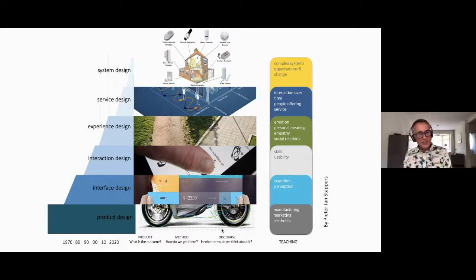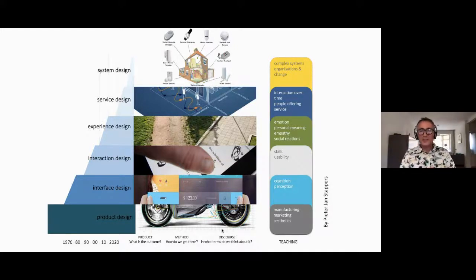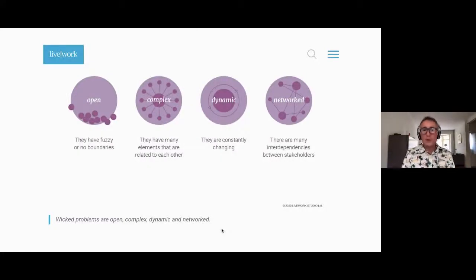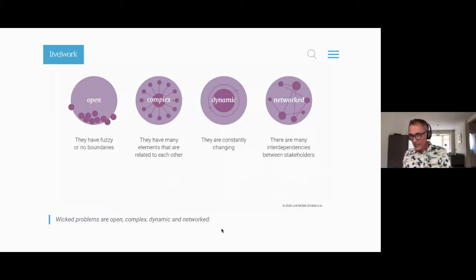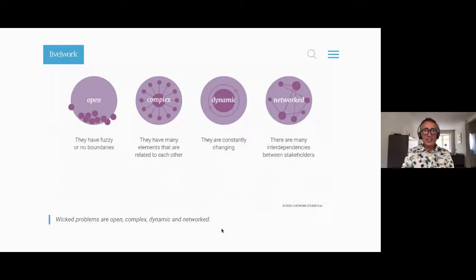If we talk about service design or system design, we're not talking about aesthetics anymore, but more about solving complex challenges — what we call wicked problems. Wicked problems are roughly always fuzzy, complex, with many dynamics and many stakeholders involved. Design ops can also be a way to deal with this kind of complex setting, as UX research and UX strategy is.